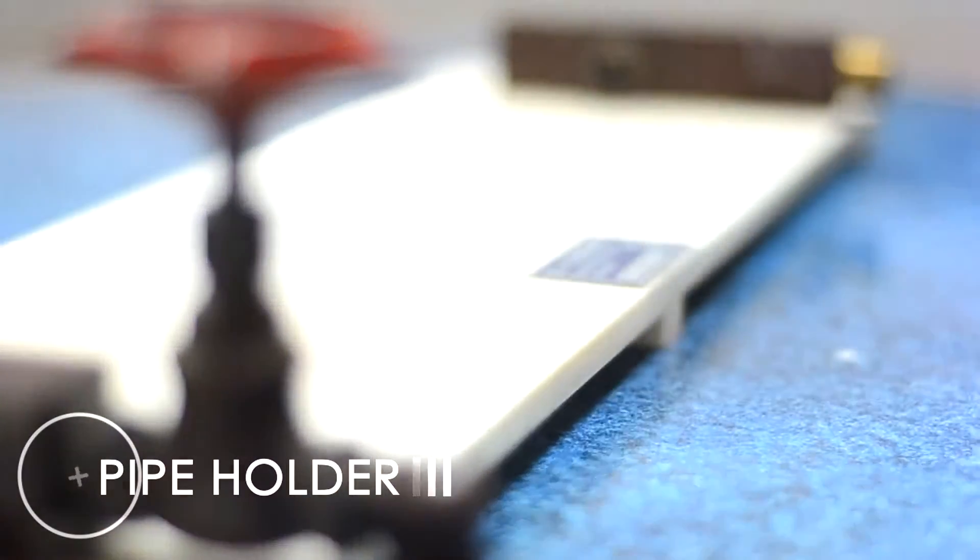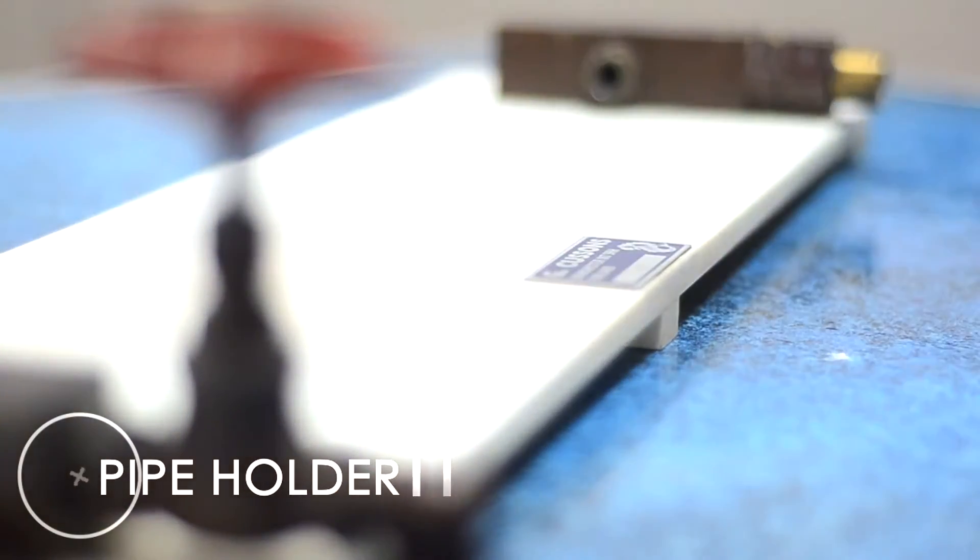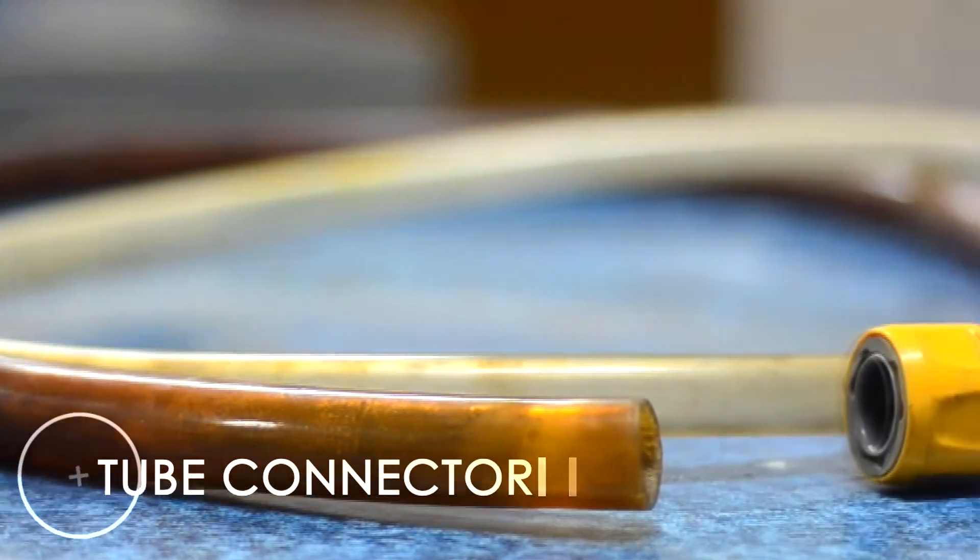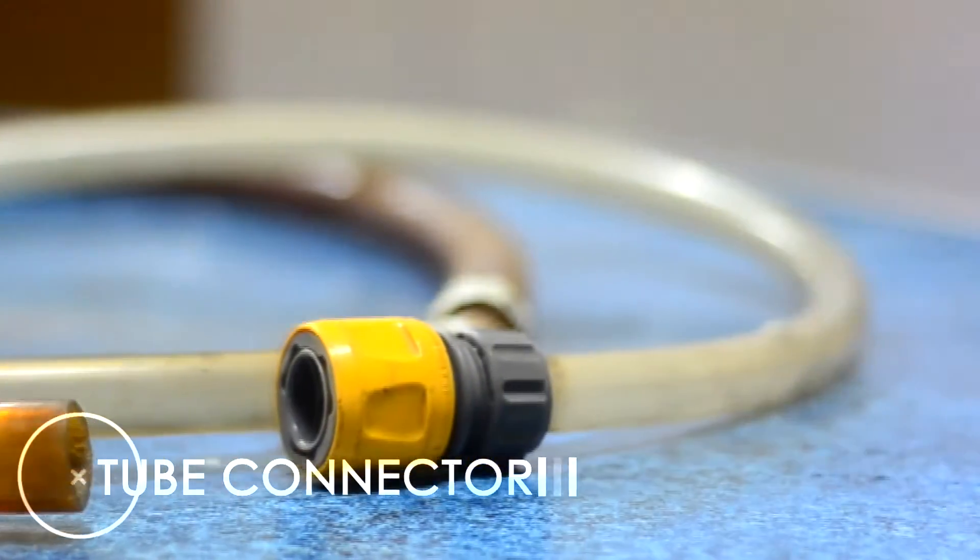Pipe holder - used to hold the pipe in place. Tube connector - used to connect the apparatus from the hydraulics bench.